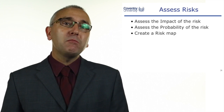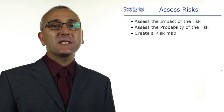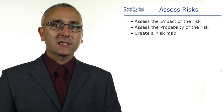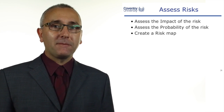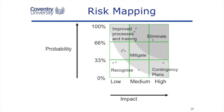We need to assess the impact of the risks and the probability of the risks, and we create a risk map. In its simplest form, impact and probability can be assessed as low, medium, and high — a three by three matrix. But you might want a four by four or five by five matrix, which gives more detail in your risk map.